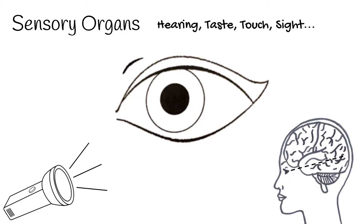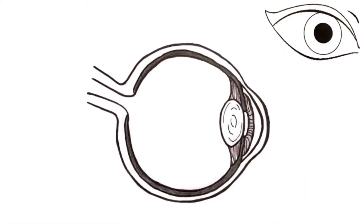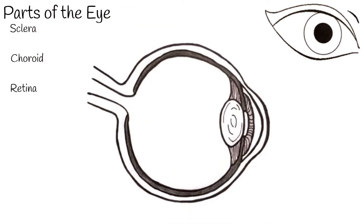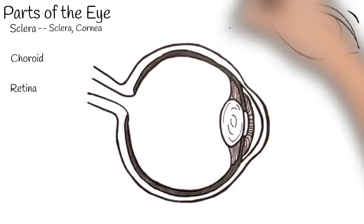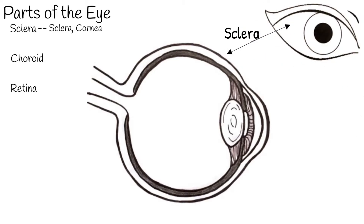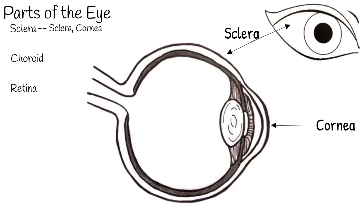The eye is made up of three layers: the sclera, the choroid layer, and the retina. Let's start on the outside and work our way in. The sclera is the outermost layer of the eye and is actually made of two parts: the sclera — yes, that is the same name — and the cornea. The sclera is the white part of the eye; it maintains the eye shape, supporting and protecting it. The cornea is clear and bulging and is the window to the eye; it refracts light towards the pupil.